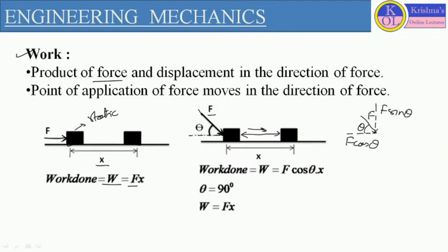If we consider displacement in the horizontal direction — from the original position to the final position — the line of action of force should be collinear with the displacement. So in that case we take the horizontal component of force. Work done will be force into displacement, but this force should be the horizontal component F cos theta. So work done equals F cos theta multiplied by x. The concept is the same; we just define it in terms of the component.